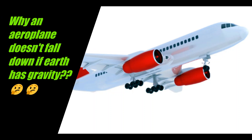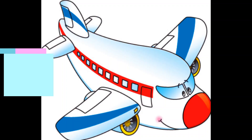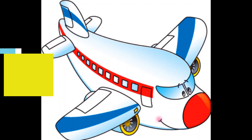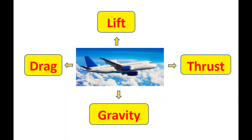Hello everyone, today we're going to see why an aeroplane doesn't fall down if earth has gravity. There are four forces that make an aeroplane fly. They are thrust, drag, lift and gravity.